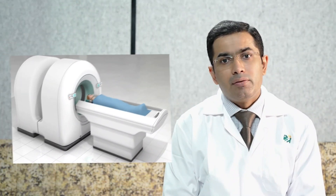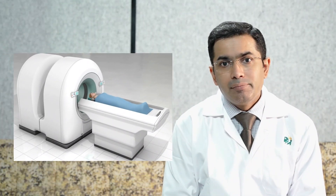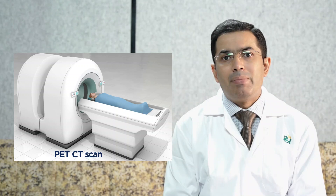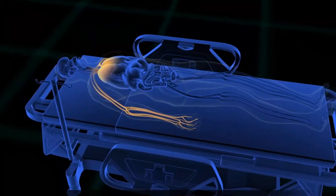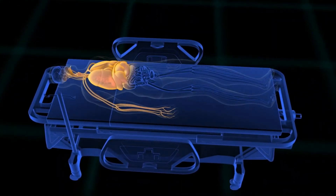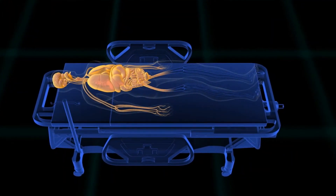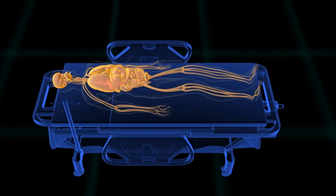Positron emission tomography, or a PET scan, is usually combined with a CT scan, which is why it is also called a PET-CT scan. A PET scan is a way to create pictures of the organs and tissues inside of the body.